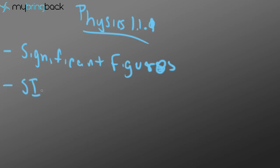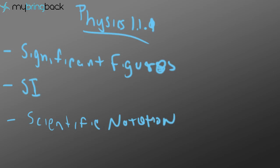We're also going to be talking about the international system of units. The French say "système international" — us Americans kind of switch it around for some reason. SI is what that's called, the units that we need to use. And we're also going to talk about scientific notation. So those will probably be the first three lessons — sorry for the terrible handwriting — that you guys are going to have to get used to.